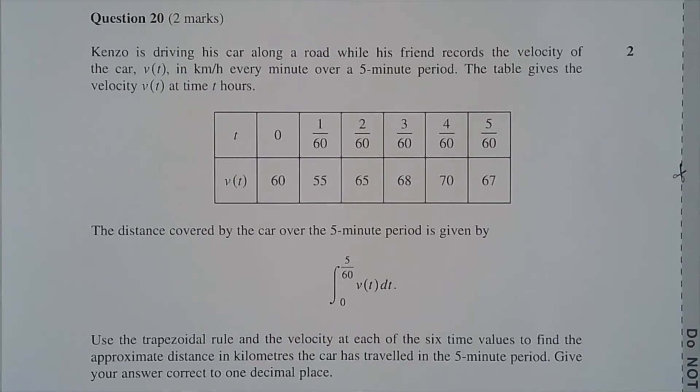Use the trapezoidal rule and the velocity at each of the 6 time values to find the approximate distance in kilometers the car has traveled in the 5-minute period. Give your answer correct to 1 decimal place.